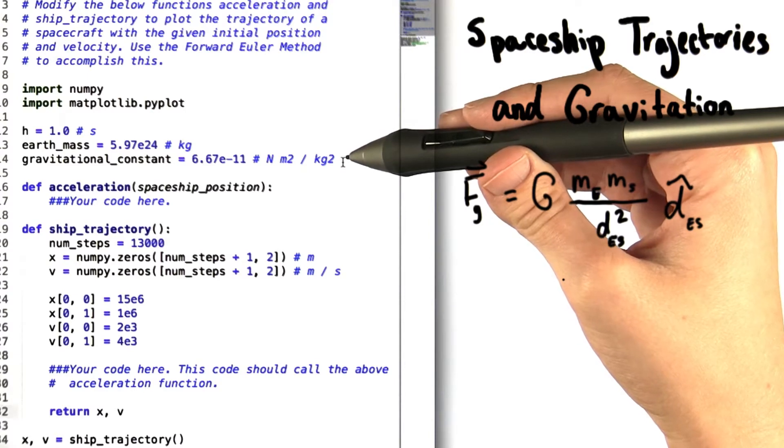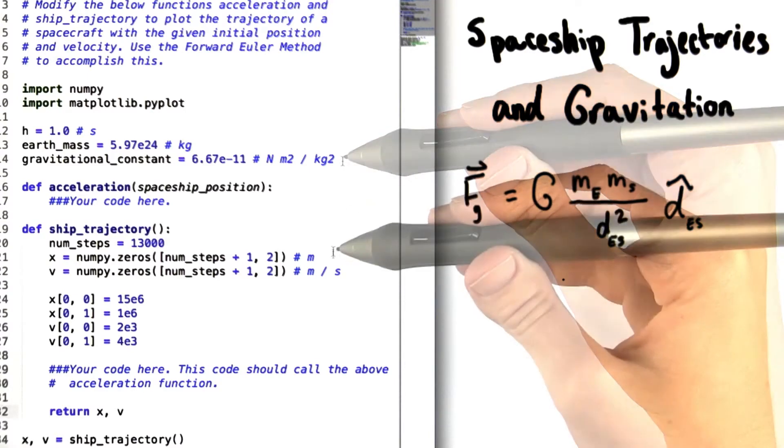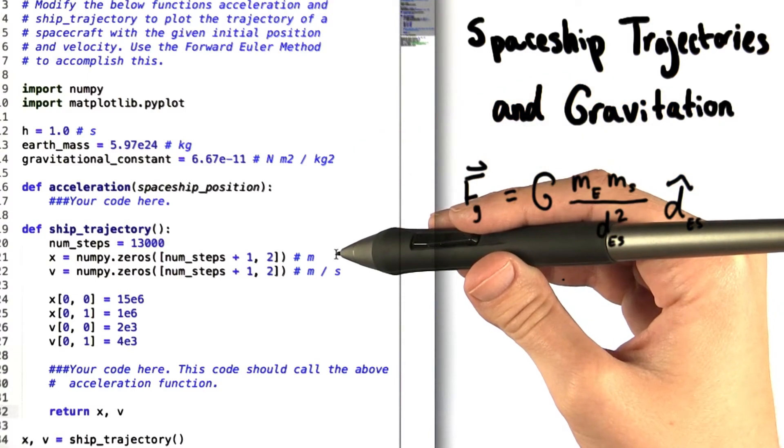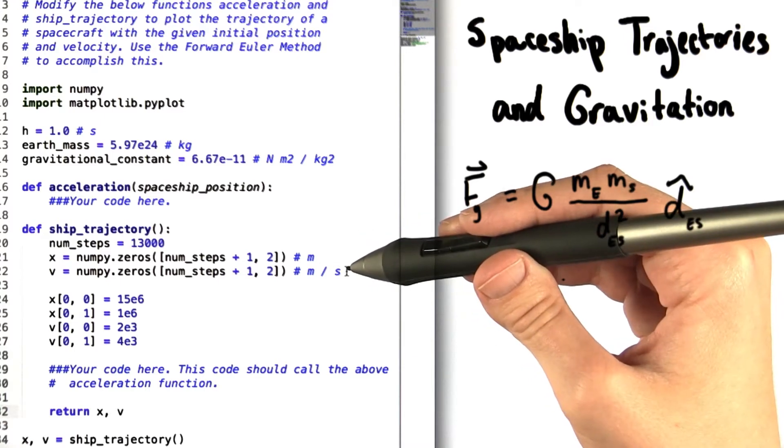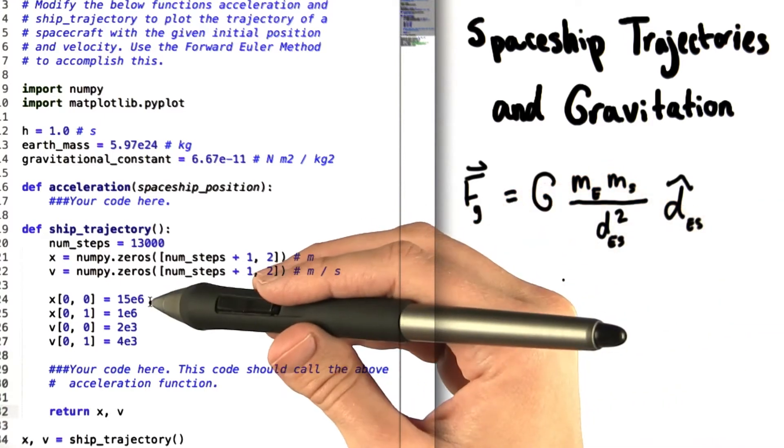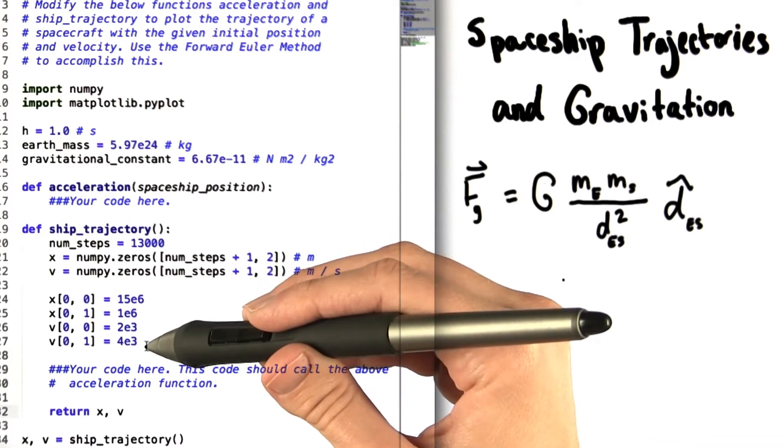which you might recognize as capital G from the equations in other videos. We've also created arrays for position and velocity, which right now are filled with zeros, and set the initial position and velocity of the spacecraft.